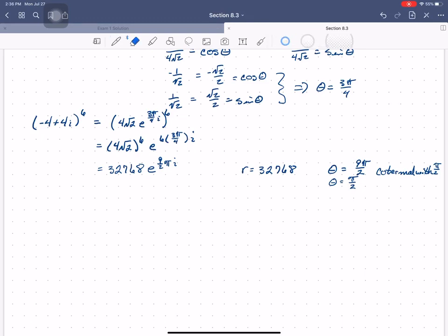So we remember that a equals r cosine theta, which means that a equals 32,768 times the cosine of pi over 2. What's the cosine of pi over 2? Zero. So that means a equals zero.